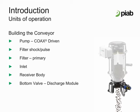The bottom valve on the smaller PyFlow units can either be a conical discharge or a full open discharge. The full open discharge is typically reserved for non-free flowing product, whereas the conical discharge is used with free flowing product. For the larger PyFlow units, we can introduce an option called fluidization — a fluid bed at the discharge of the conveyor for non-free flowing products.